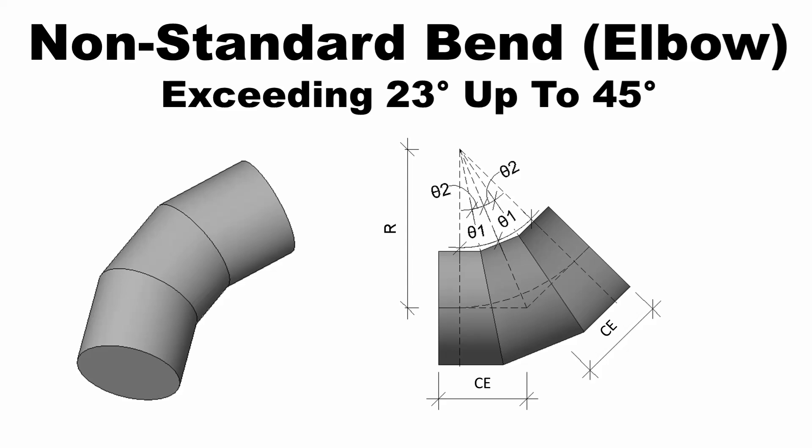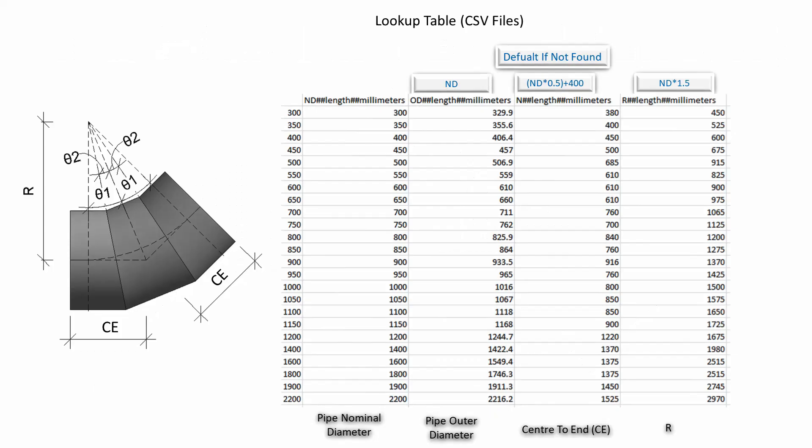Hello everyone. Today, I would like to show you how to create a non-standard bend exceeding 23 degrees up to 45 degrees elbow Revit family. This is a lookup table CSV file. Its data are referred from the manufacturer specifications. I will use this lookup table CSV file to create the parametric family.